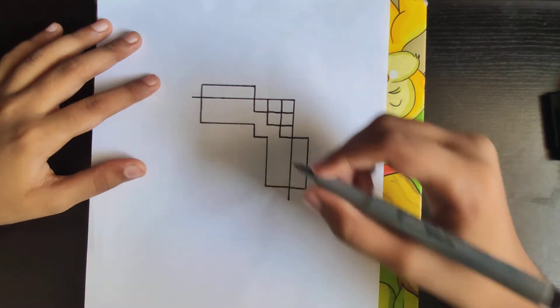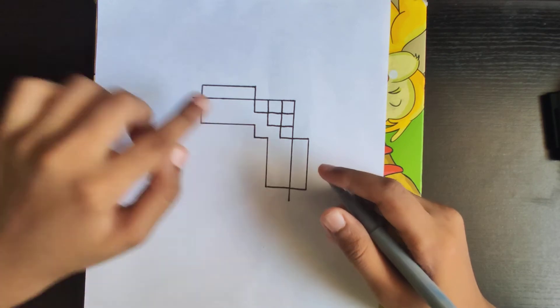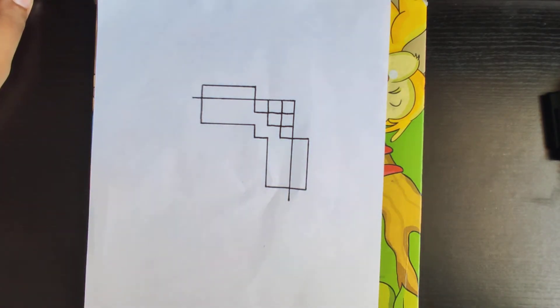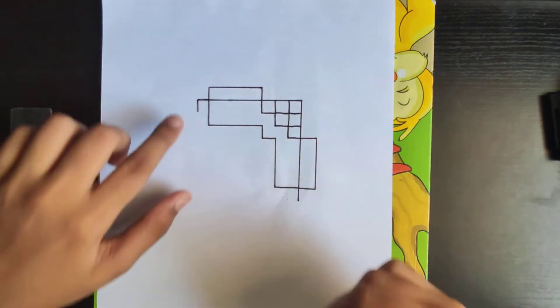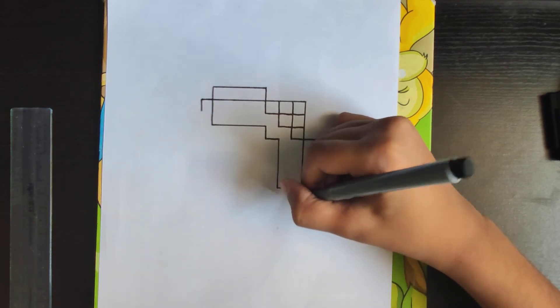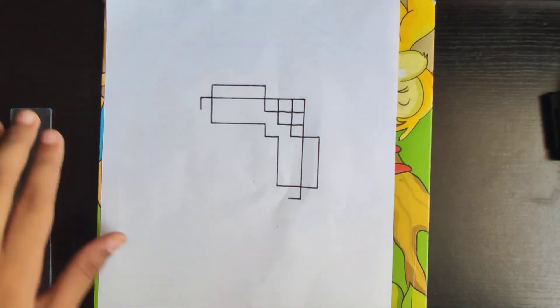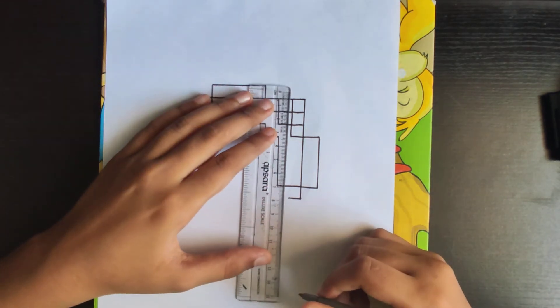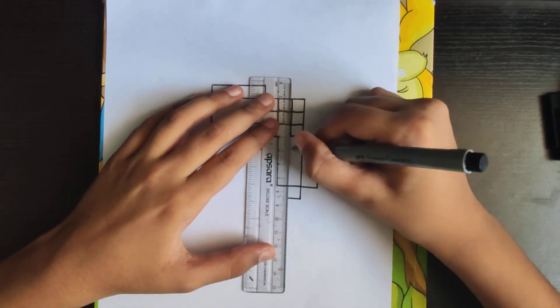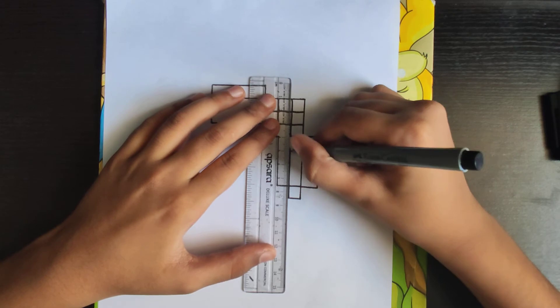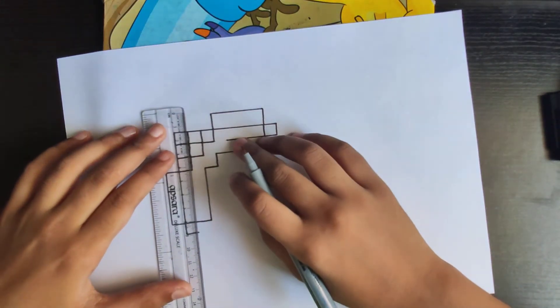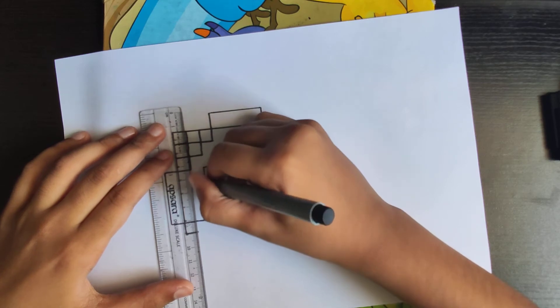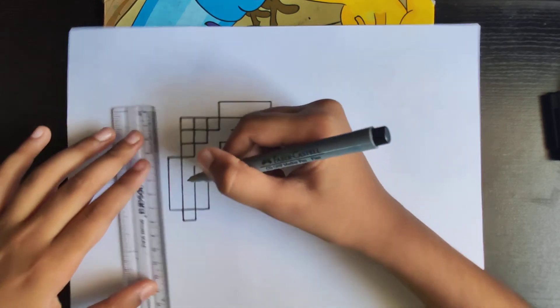Make two lines like this. Make a line at this point and another one at this. Now take your scale and make a line in here, in the distance of one box. Another one, like this.